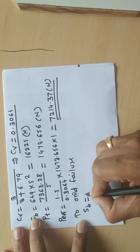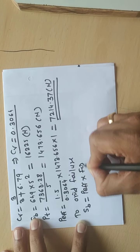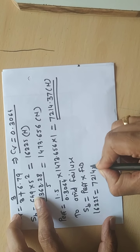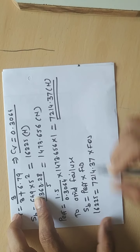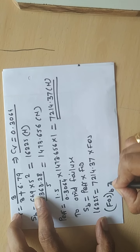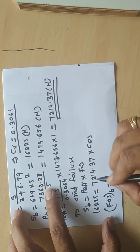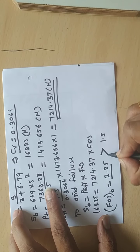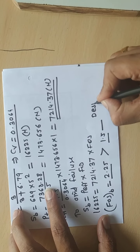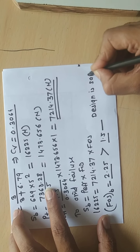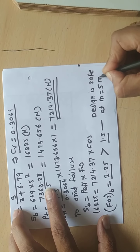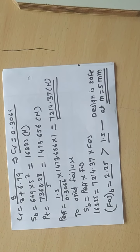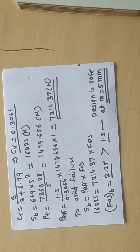To verify, check factor of safety: SB = P_effective × FoS → 16225 = 7214.37 × FoS. Therefore FoS = 2.25. The given value is 1.5. Since calculated FoS (2.25) is greater than given FoS (1.5), the design is safe. Module M = 5 mm is acceptable.